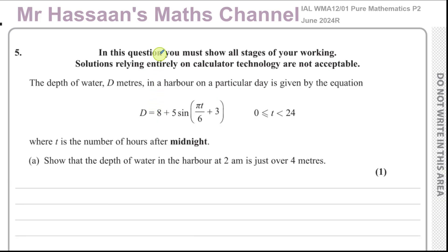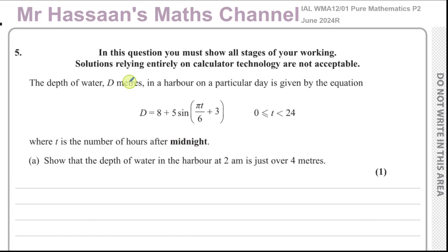We have a question about trigonometry — another modeling type question where the depth of water d meters in a harbour on a particular day is given by the equation d = 8 + 5 sin(πt/6 + 3), where t is between 0 and 24 and represents the number of hours after midnight.